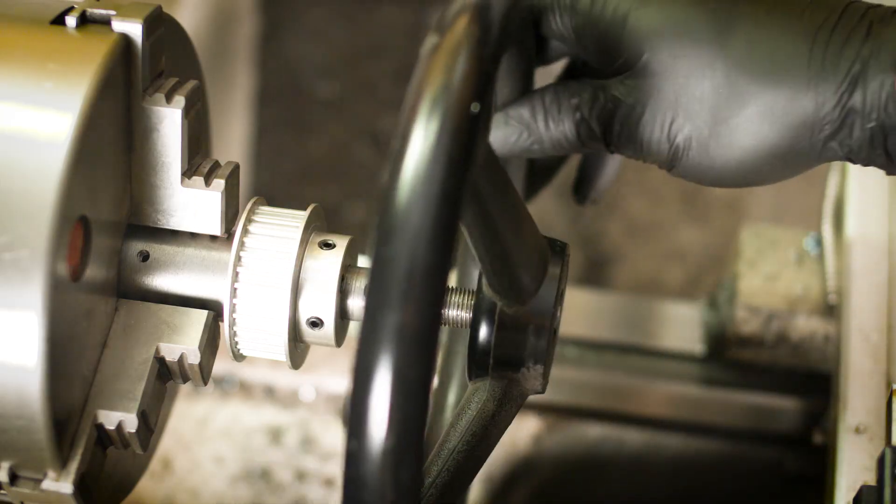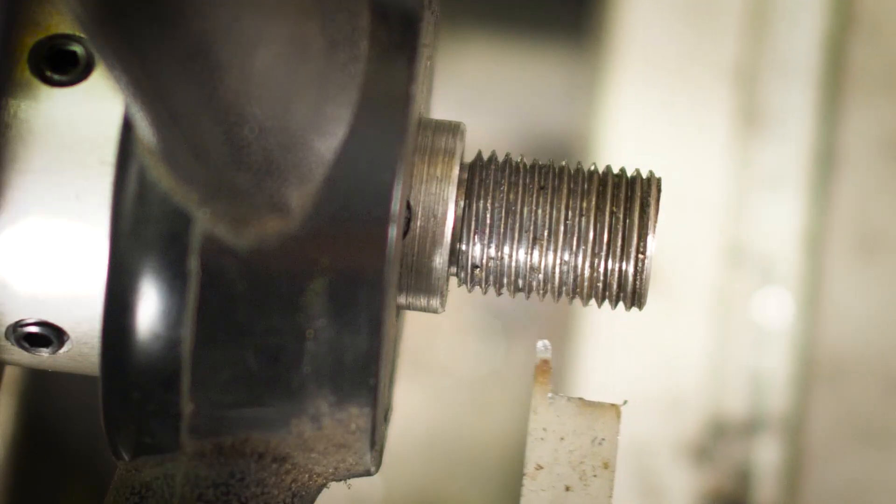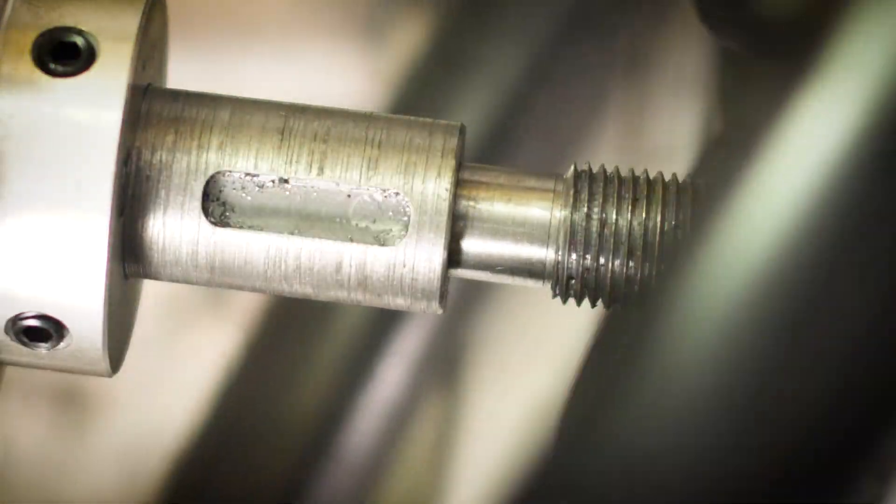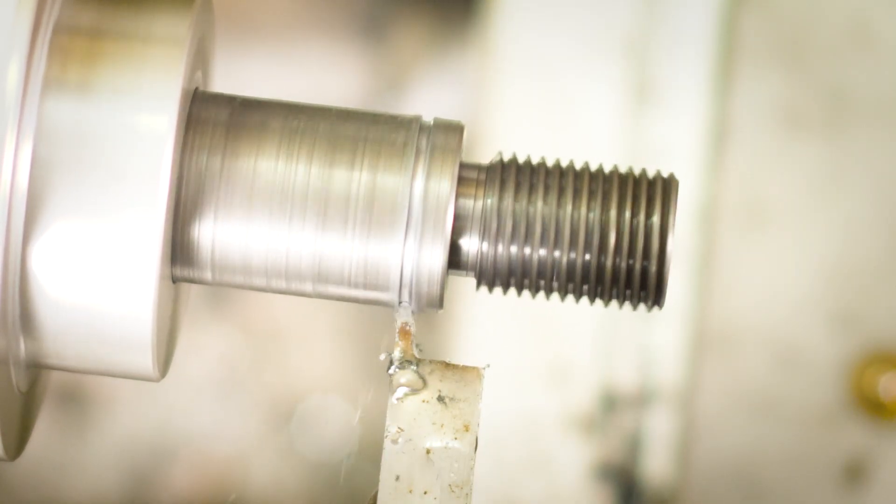I then installed the handwheel backwards. This is to provide the correct spacing but allow tool clearance so I can determine exactly where I need to put my circlip retaining groove. And this will keep everything locked together.